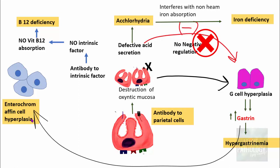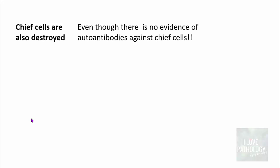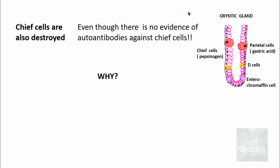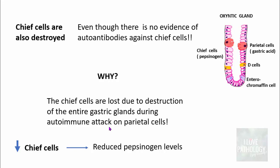That is the pathogenetic mechanism of autoimmune atrophic gastritis. Apart from parietal cell destruction, chief cells are also destroyed — not due to autoantibodies against chief cells (there is no evidence of that), but because the entire oxyntic gland is destroyed during the autoimmune attack on parietal cells. This results in decreased chief cells and therefore decreased pepsinogen levels. To summarize the characteristic features: achlorhydria, hypergastrinemia, vitamin B12 deficiency, iron deficiency, reduced pepsinogen levels, and enterochromaffin cell hyperplasia.